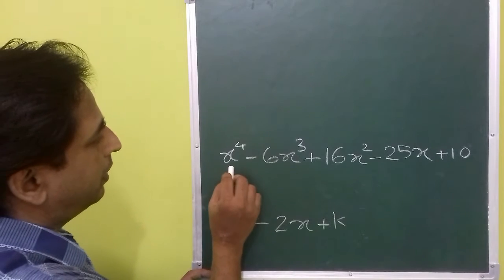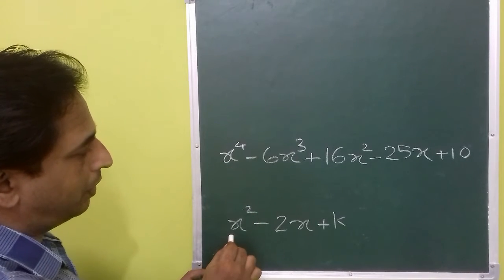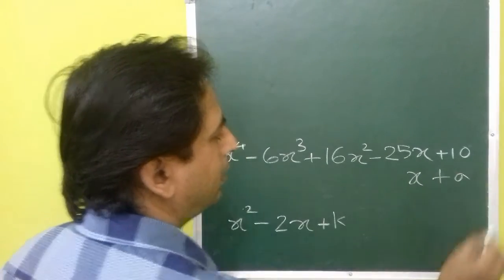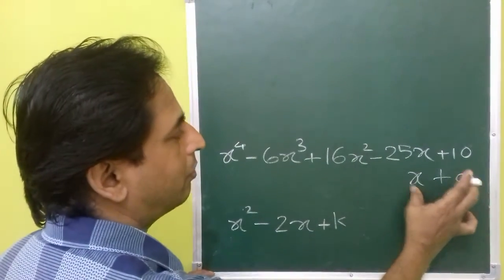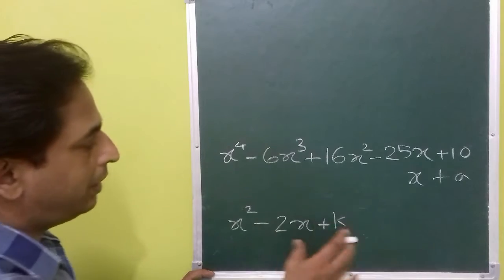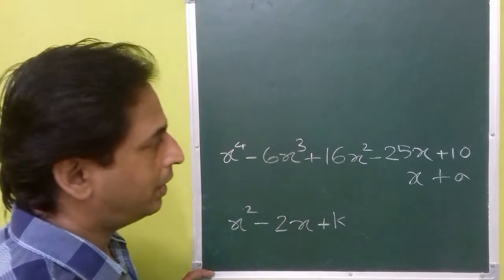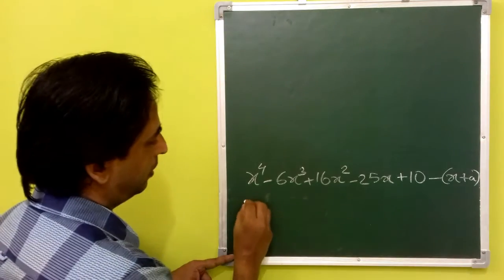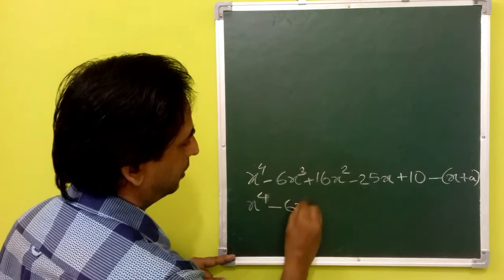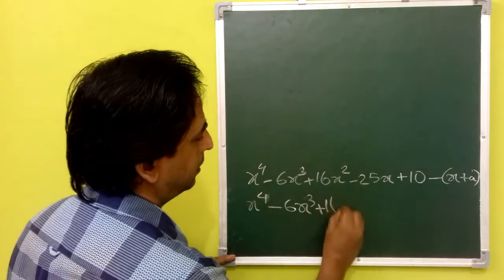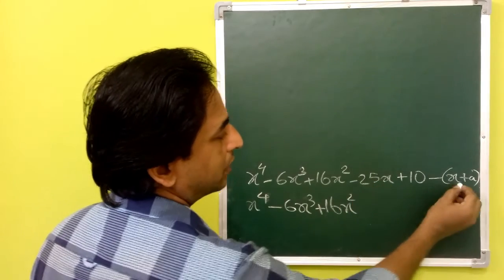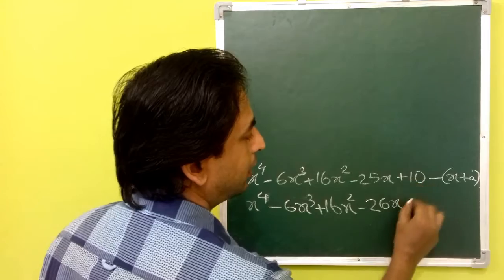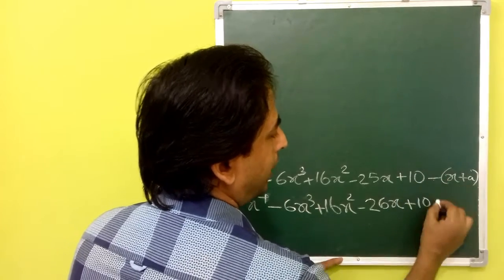In the problem, if you divide this polynomial by this polynomial, you will get a remainder x plus a. That means if you subtract this remainder from the dividend and divide by the divisor, you will get a remainder 0. If you subtract x plus a from this polynomial, you will get x to the 4th, 6x cubed plus 16x squared minus 25x minus x will become minus 26x, plus 10 and minus 8.